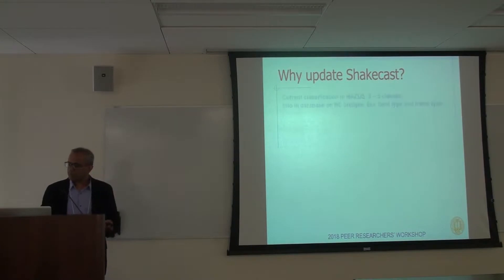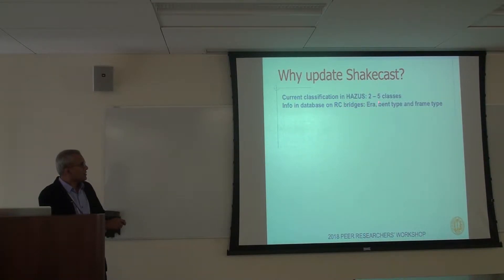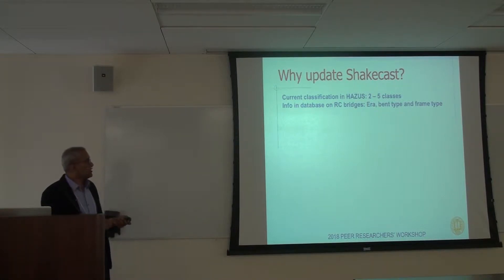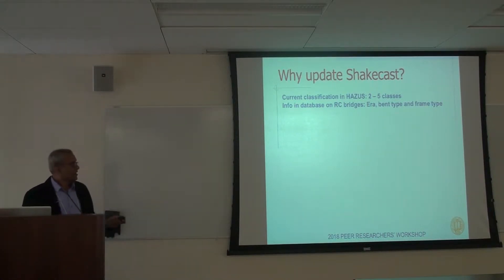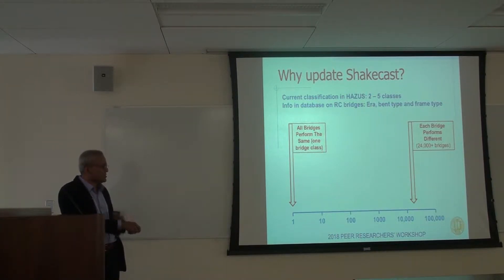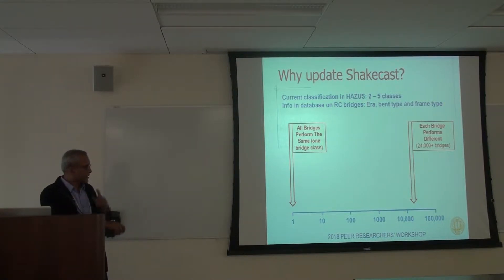So why update ShakeCast? Currently they use Hazus, and it only has about two to five classes of bridges. The only information in the database is the time it was built, the type of bent, and the frame type. There's no information about the dimensions of the columns or the spans of the bridge. For some of the work going on at UCLA, it would be useful to enhance this database. The question is: do we classify all bridges with just one bridge class, or do we assume each bridge has its own fragility — which means 24,000 to 25,000 different models? Obviously neither extreme is realistic, so the idea is to come up with something in between.